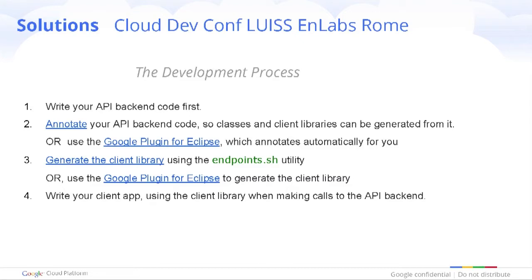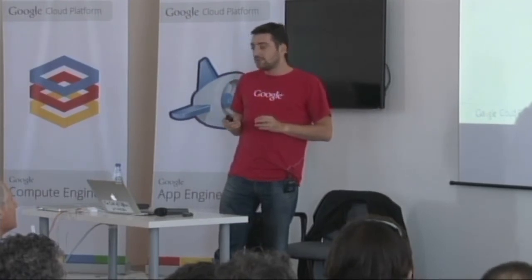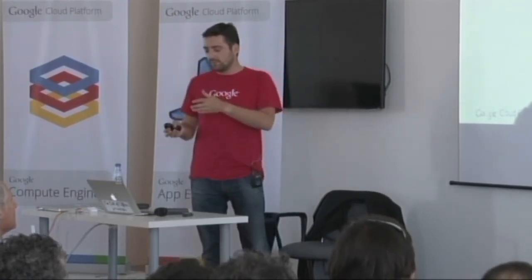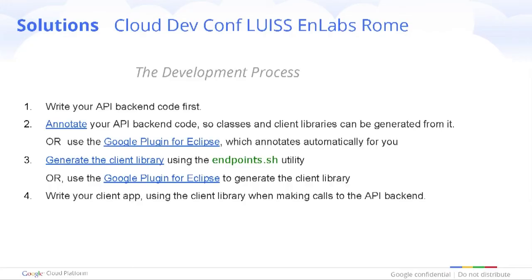By the way, who is an Eclipse developer here? About 20% of you. So the two options are available. Then you want to generate the client library, from which you will write your mobile app — again two solutions: you can use the Endpoints.sh tool, or use the plugin directly within Eclipse. For the last step, you can start working on your client app and focus on your UI and the business logic on the client side.